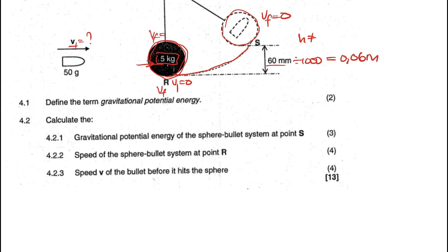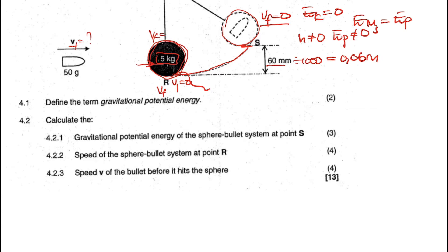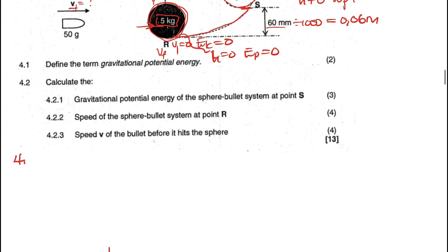Since the height is not equal to zero, we have gravitational potential energy at point S. The velocity at S is zero, so kinetic energy is also zero, meaning the mechanical energy at S consists of gravitational potential energy only. At the bottom, the block is stationary and height is zero, so both kinetic energy and gravitational potential energy are zero there.